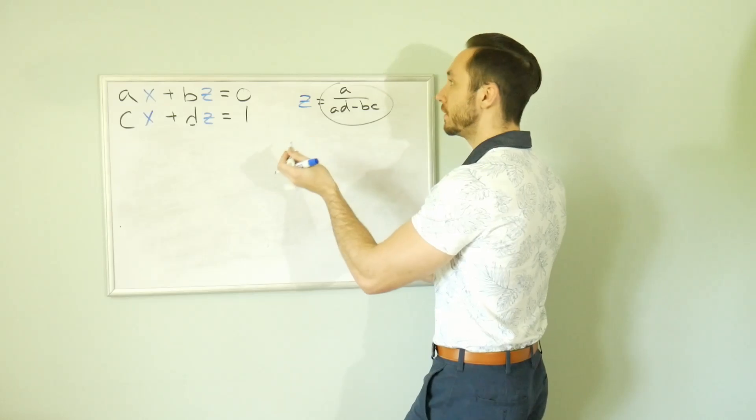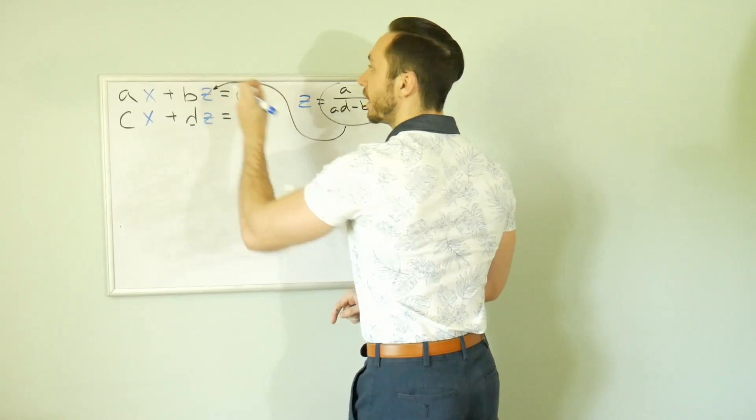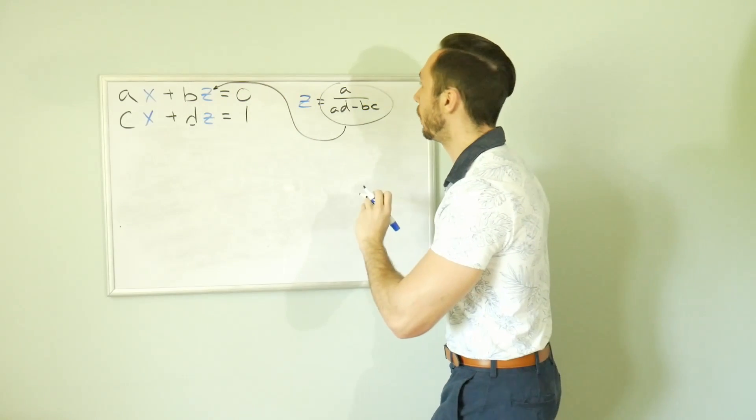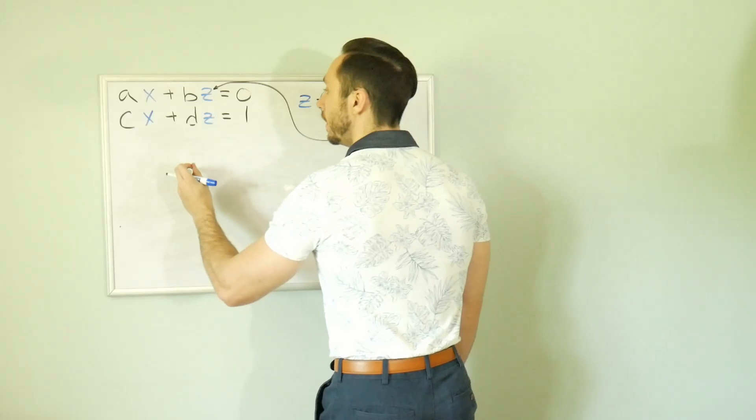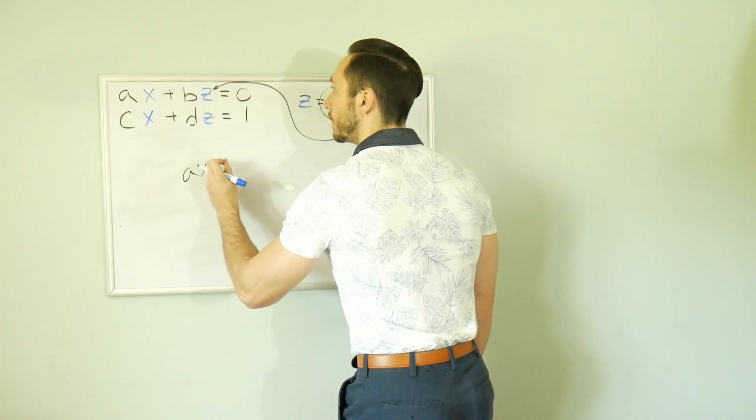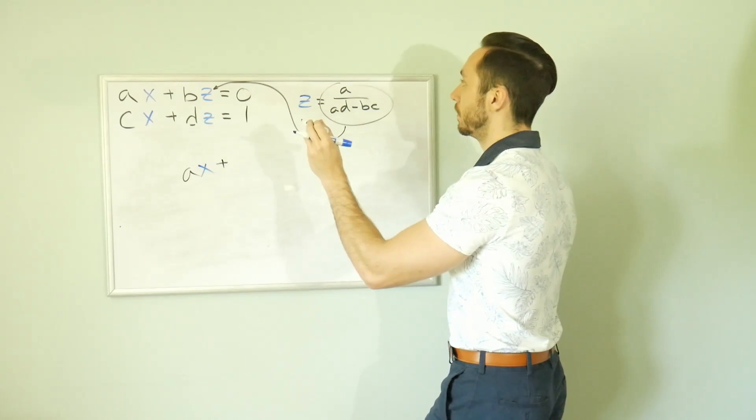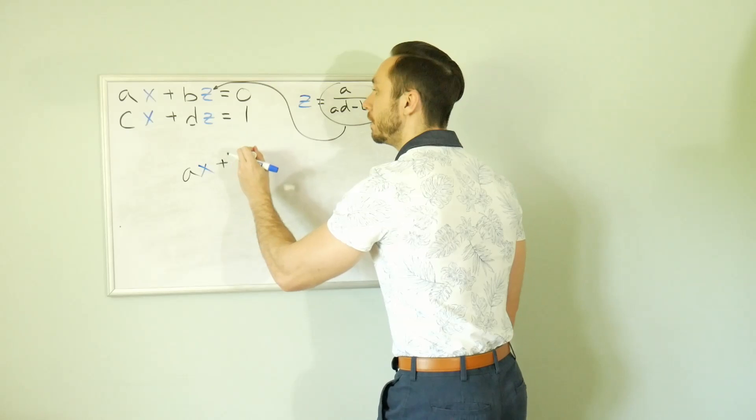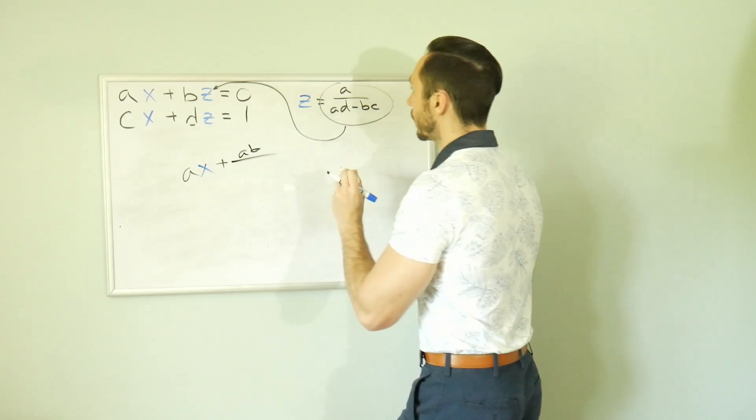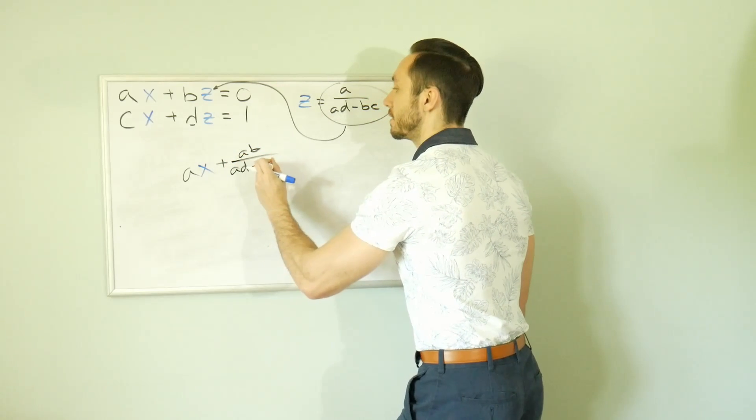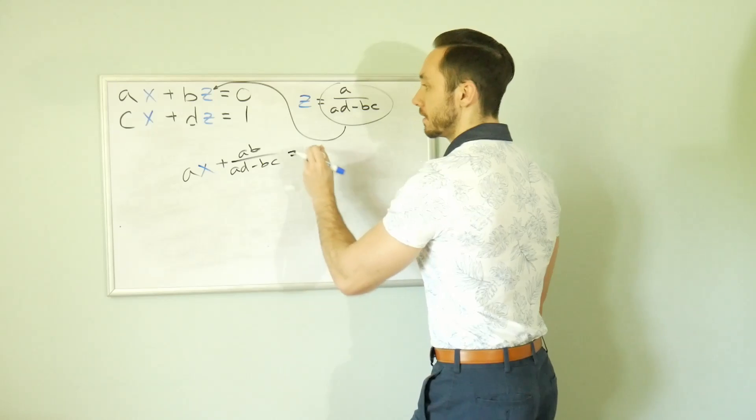Hey, let's plug this thing into this Z right here, top equation. I like zeros more than ones. So we have AX plus this whole thing. So we'll just do, we'll do AB over AD minus BC. And this is equal to zero.